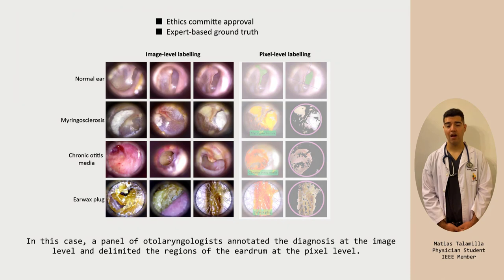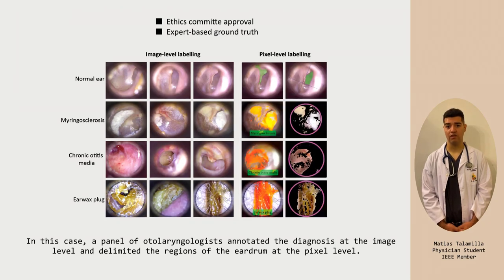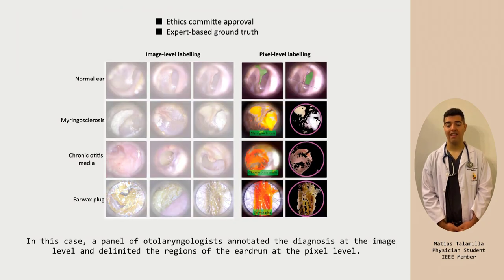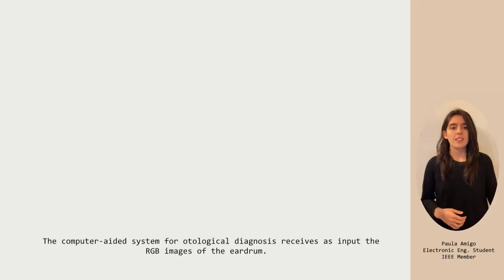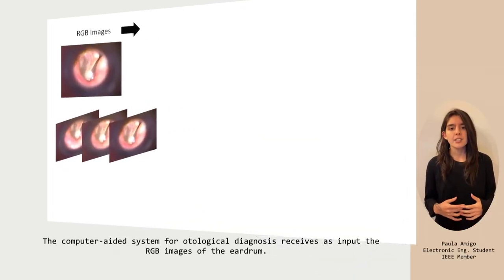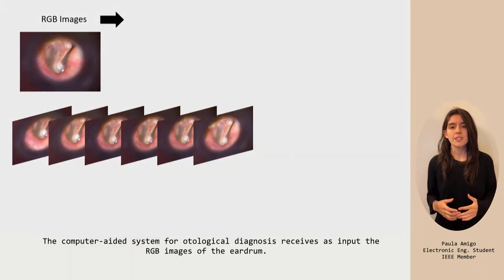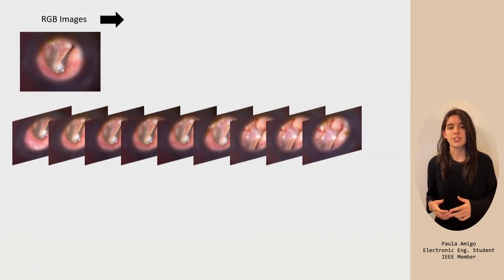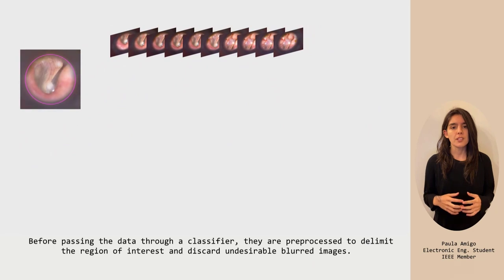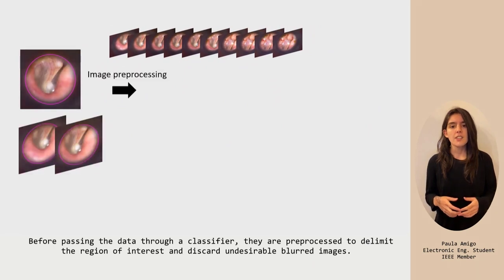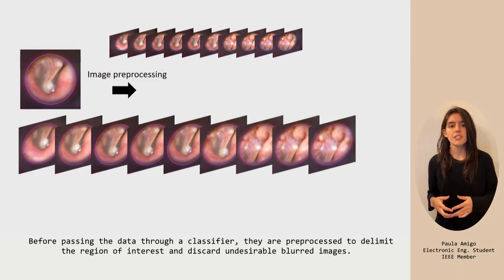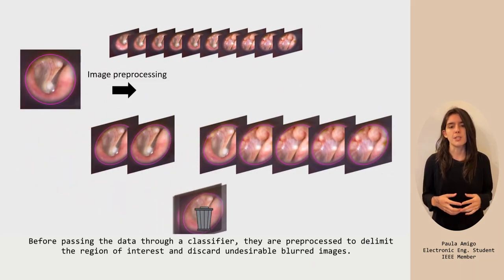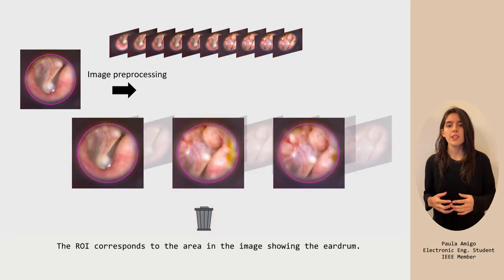In this case, a panel of otolaryngologists annotated the diagnosis at the image level and delimited the regions of the eardrum at the pixel level. The computer-aided system for otological diagnosis receives as input the RGB images of the eardrum. Before passing the data through a classifier, they are preprocessed to delimit the region of interest and discard undesirable blurred images. The ROI corresponds to the image showing the eardrum.